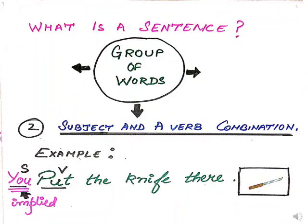In the second part we see subject and verb combination. So a sentence is also a subject and verb combination. For example, 'put the knife there' — here I did not explicitly state the subject, but you can automatically understand that I am talking to you. So the subject 'you' is implied, and 'put' is the verb. This is a combination of a subject and a verb, as seen in the example 'put the knife there.'